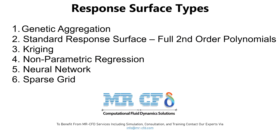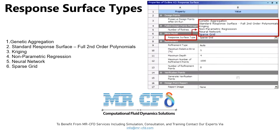The response surface production mechanism in the ANSYS Workbench software optimization section has six different types. This figure shows the response surface types available in the ANSYS Workbench software.